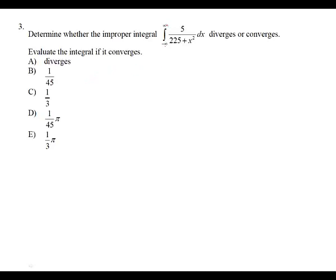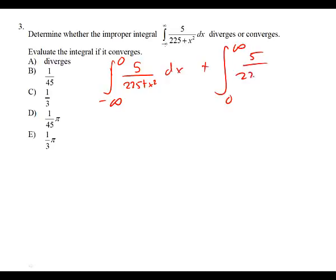We've got from negative infinity, so I need to make the convenient split. Where would that be? Probably zero. So: from negative infinity to zero of five over 225 plus x squared, DX, plus from zero to infinity of five over 225 plus x squared, DX.